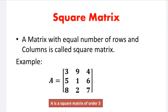We are going to explain the matrix in this video. This is the square matrix. A matrix with an equal number of rows and columns is called a square matrix. The rows and columns are equal.